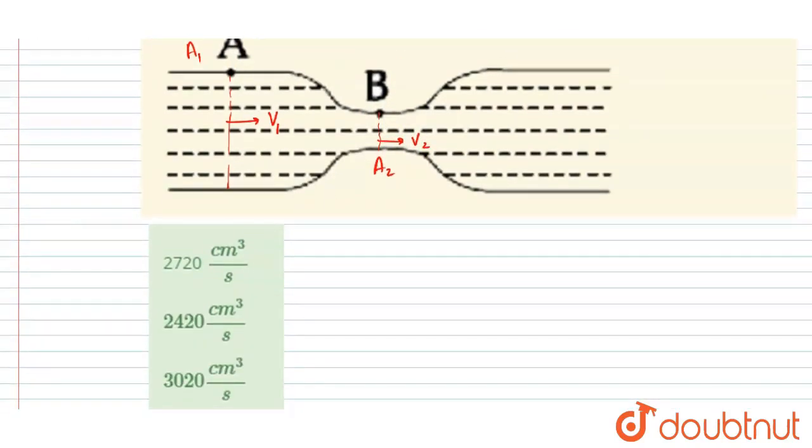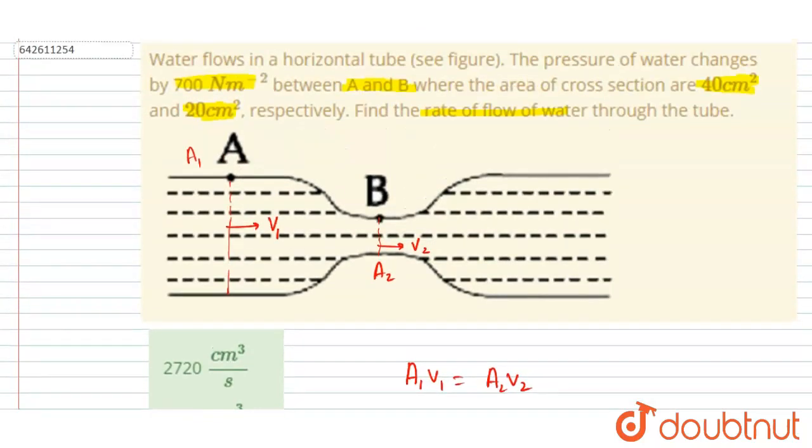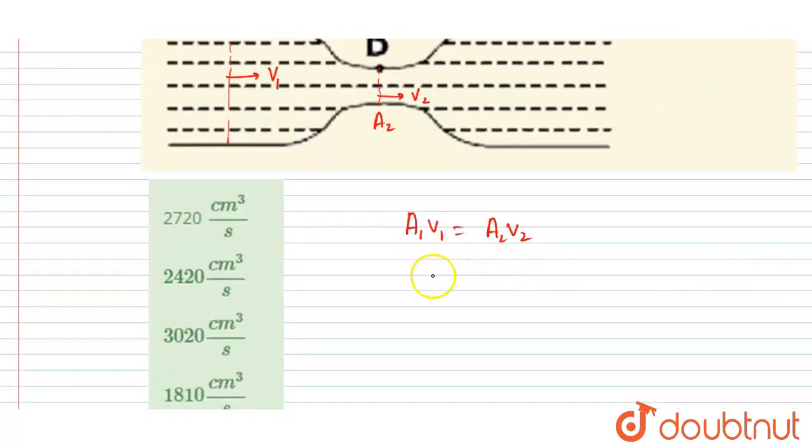Since the volume flow rate through each cross section will be same since the fluid is ideal, I will take A1 V1 equals A2 V2. You can put the value of A1 and A2. A1 is 40 cm and A2 is 20. So from here you will get V2 equals 2 V1.